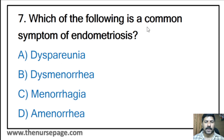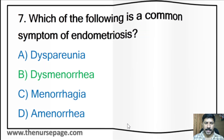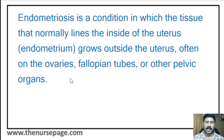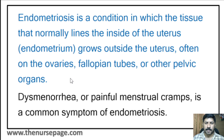Seventh question: Which of the following is a common symptom of endometriosis? Dyspareunia, dysmenorrhea, menorrhagia, or amenorrhea? The correct answer is dysmenorrhea, meaning painful menstruation. Endometriosis is a condition where tissue that normally lines the inside of the uterus (endometrium) grows outside the uterus — on the ovaries, fallopian tubes, or other pelvic organs. Dysmenorrhea or painful menstrual cramps is the most common symptom.